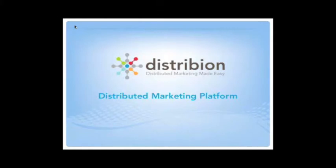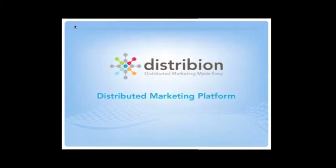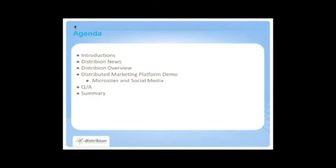So real quick, the agenda looks like this. Basically we're going to talk a little bit about Distribion, some of the news, and a brief overview. We have only 30 minutes, and then I'm going to go into the platform at a high level, leaving enough time for questions and answers — hopefully maybe 10 to 15 minutes — and then a summary, and then we'll all go back to work.